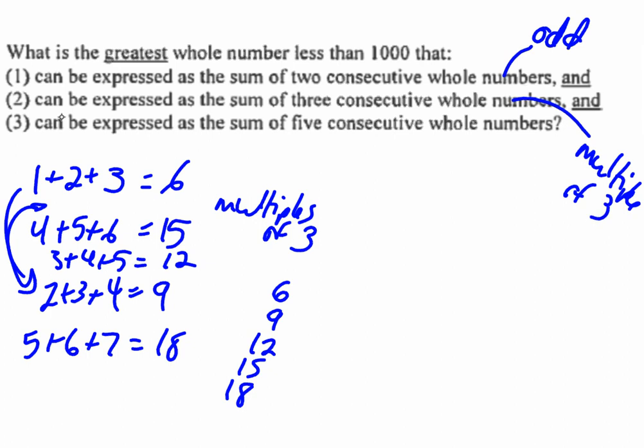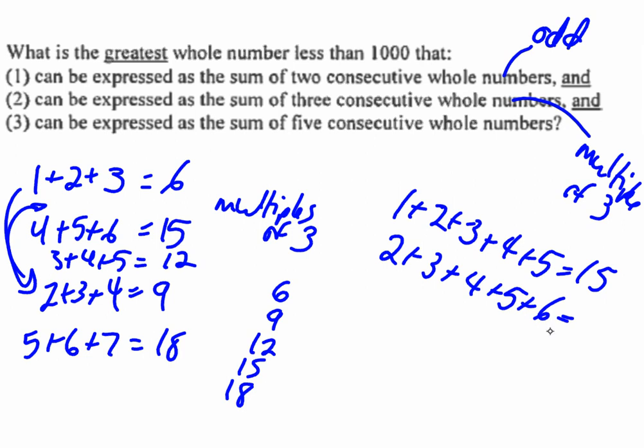And then same thing with five numbers—if you were to add five consecutive numbers, what you're going to notice with adding five consecutive whole numbers is that you always get multiples of 5.